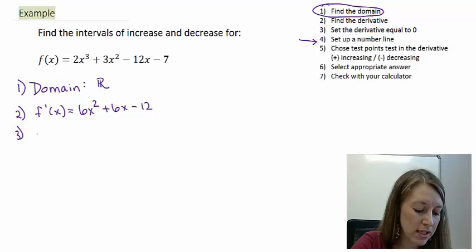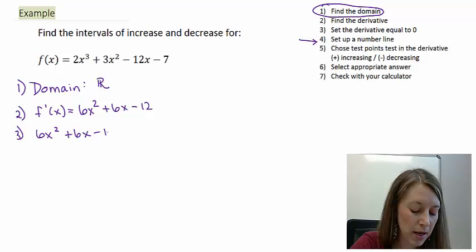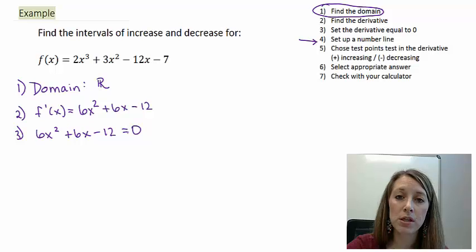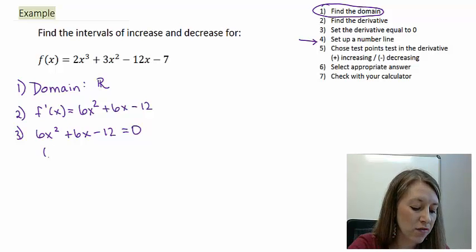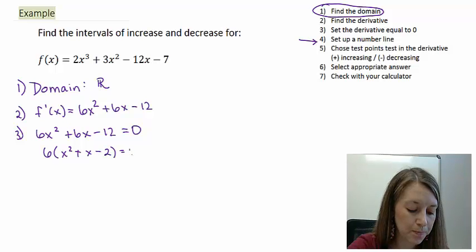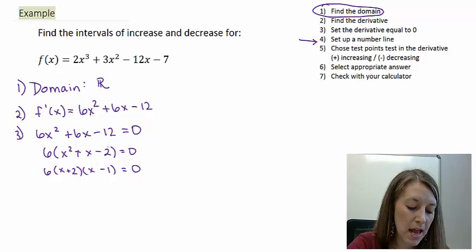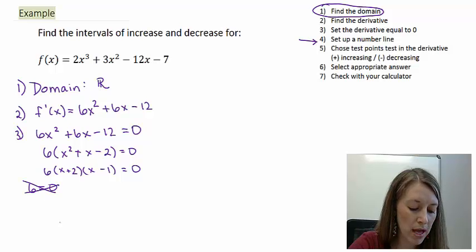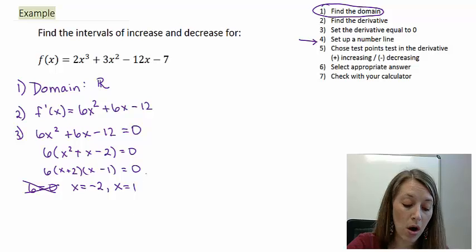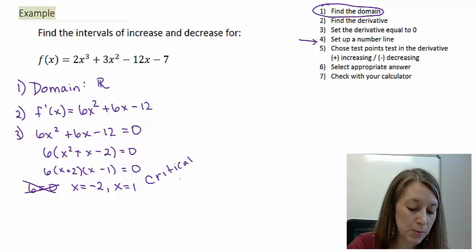After we find our derivative, we set it equal to zero: 6x squared plus 6x minus 12 equals zero, because zero is where we transition between increasing and decreasing. This is just a quadratic — I'll solve it by factoring. Factor out 6, leaving x squared plus x minus 2, then factor the trinomial into x plus 2 times x minus 1. Setting each factor equal to zero gives x equals negative 2 and x equals positive 1. These are my critical values — where my graph transitions between increasing and decreasing.